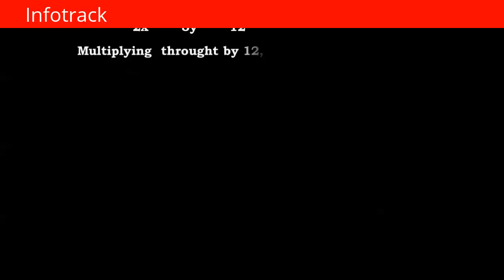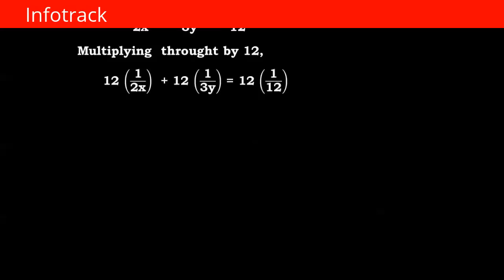The next equation is 1 upon 2x plus 1 upon 3y equals 1 upon 12. We multiply throughout by 12. We get 12 into 1 upon 2x plus 12 into 1 upon 3y equals 12 into 1 upon 12. The 12s cancel and we get 6 upon x plus 4 upon y equals 1 — equation number 2.